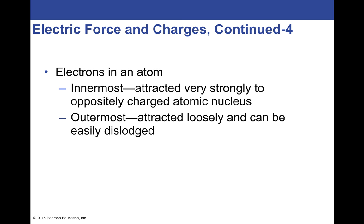Electrons are in different orbitals, and the closer they are to the nucleus the more tightly they're bound, because it takes work to pull two attracting objects apart. The attraction force is actually stronger closer to the nucleus — just like gravity gets stronger as an object gets closer to the Earth. So an electron in the innermost orbitals is more strongly attracted to the protons in the nucleus than one in a more distant orbital.